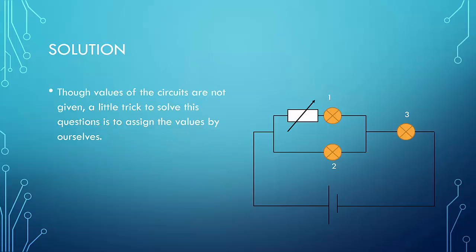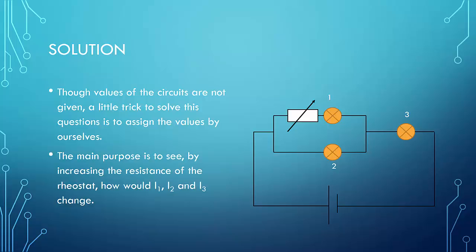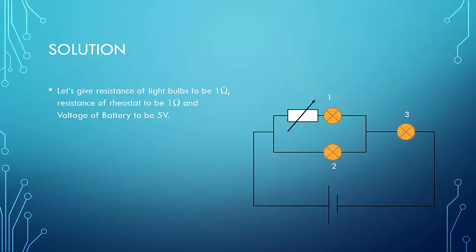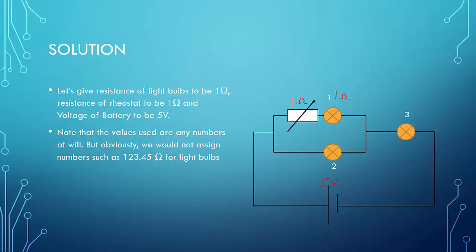For this question, though the values of the circuits are not given, a little trick to solve this question is to assign the values ourselves. The main purpose is to see, by increasing the resistance of the rheostat, how the current flowing in I1, I2, and I3 would change. So let's give the resistance of the light bulbs a value of 1 ohm, the resistance of the rheostat is also 1 ohm, and the battery voltage is 5 volts. Note that the values used are just any numbers at will.